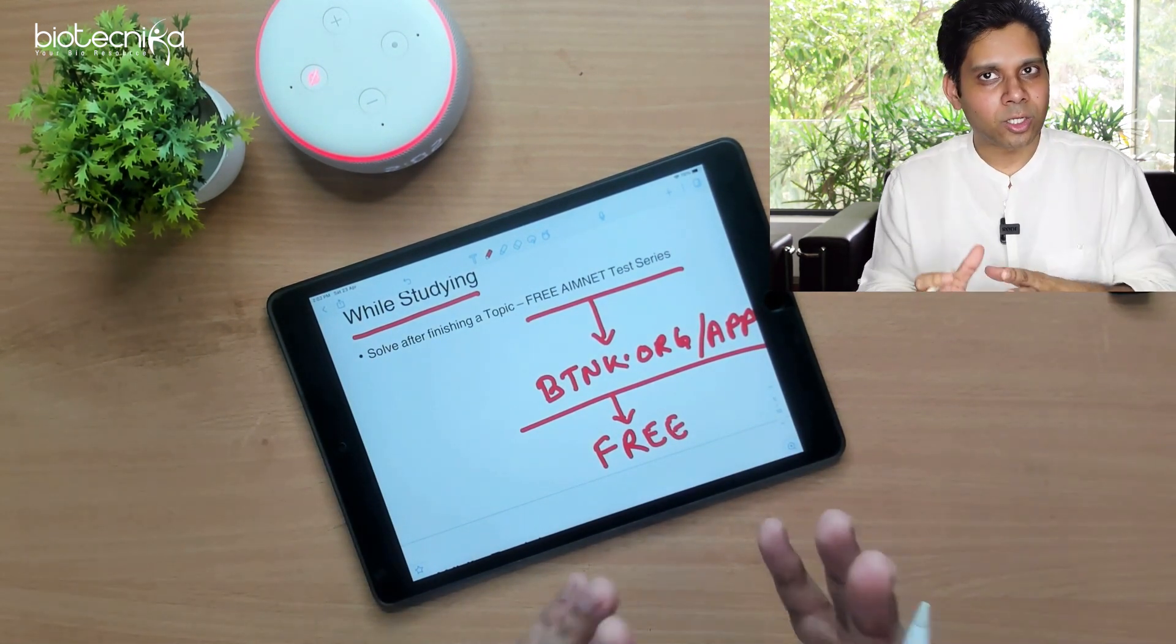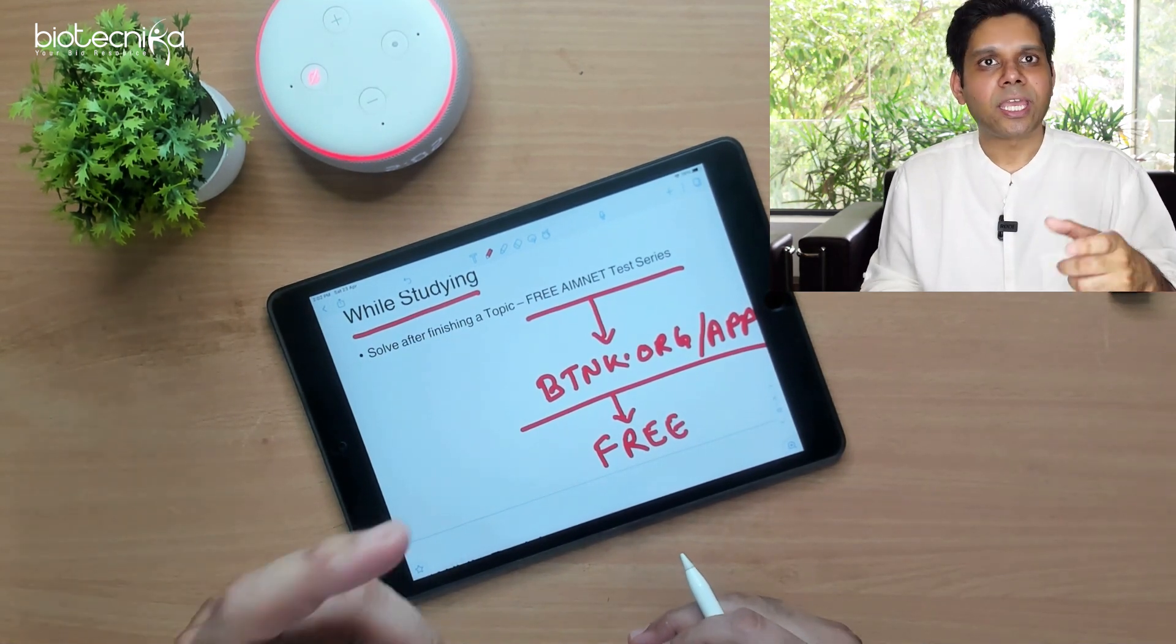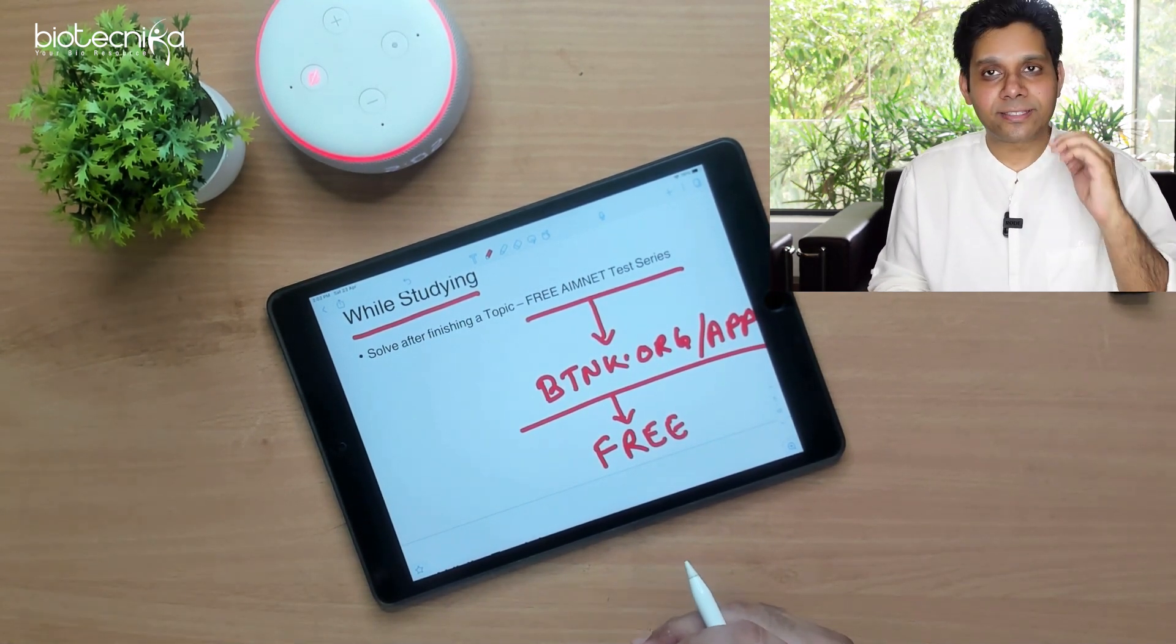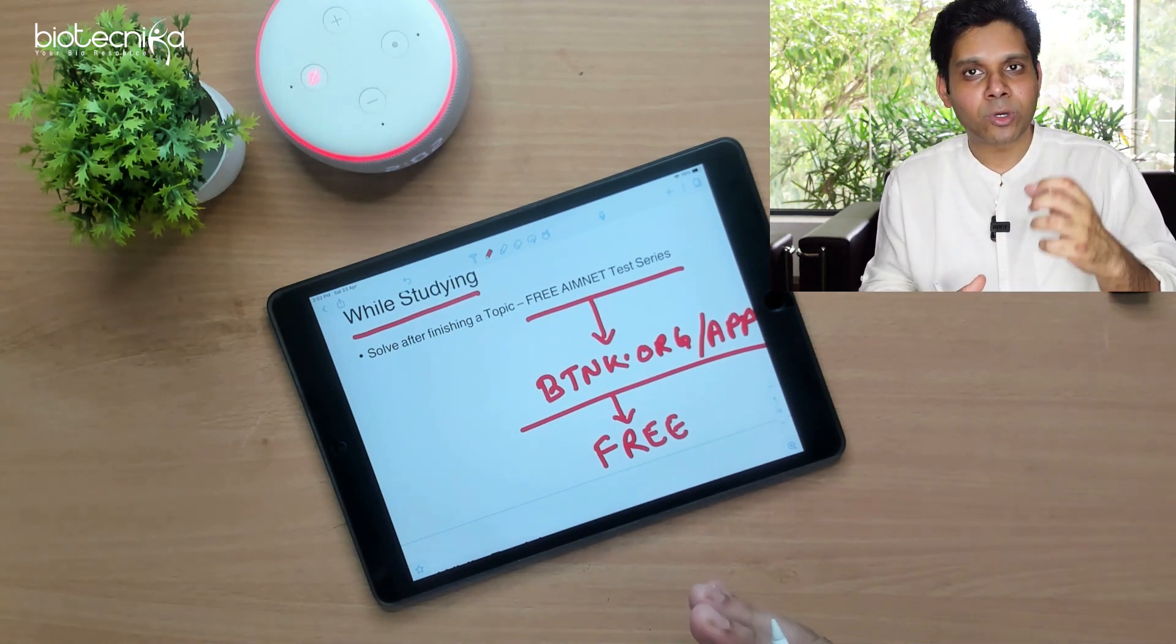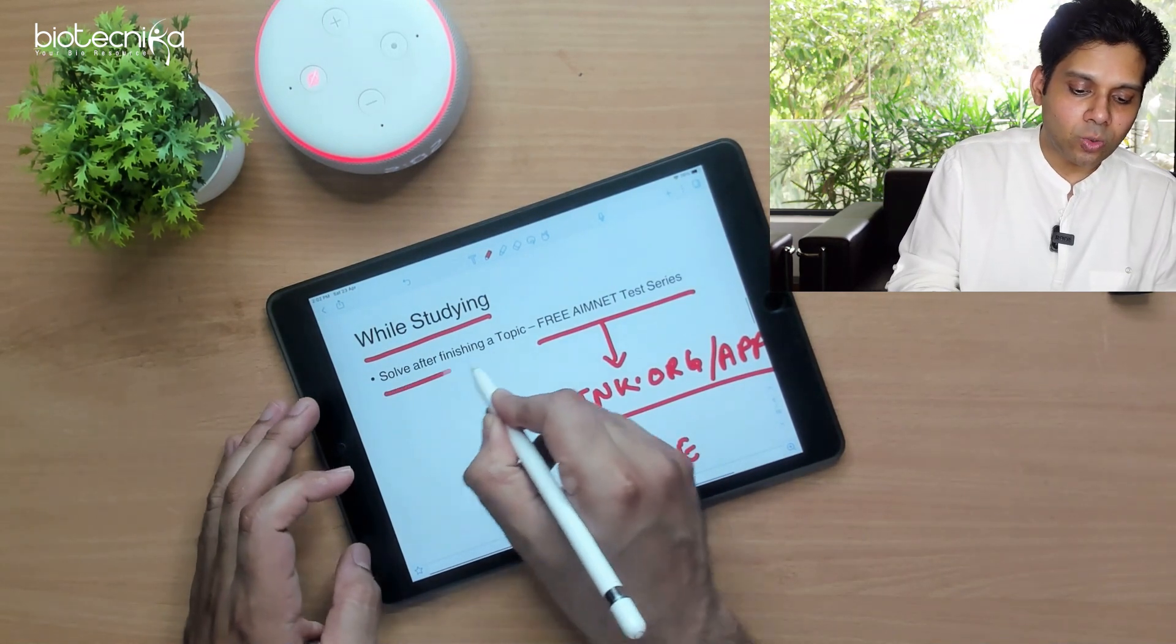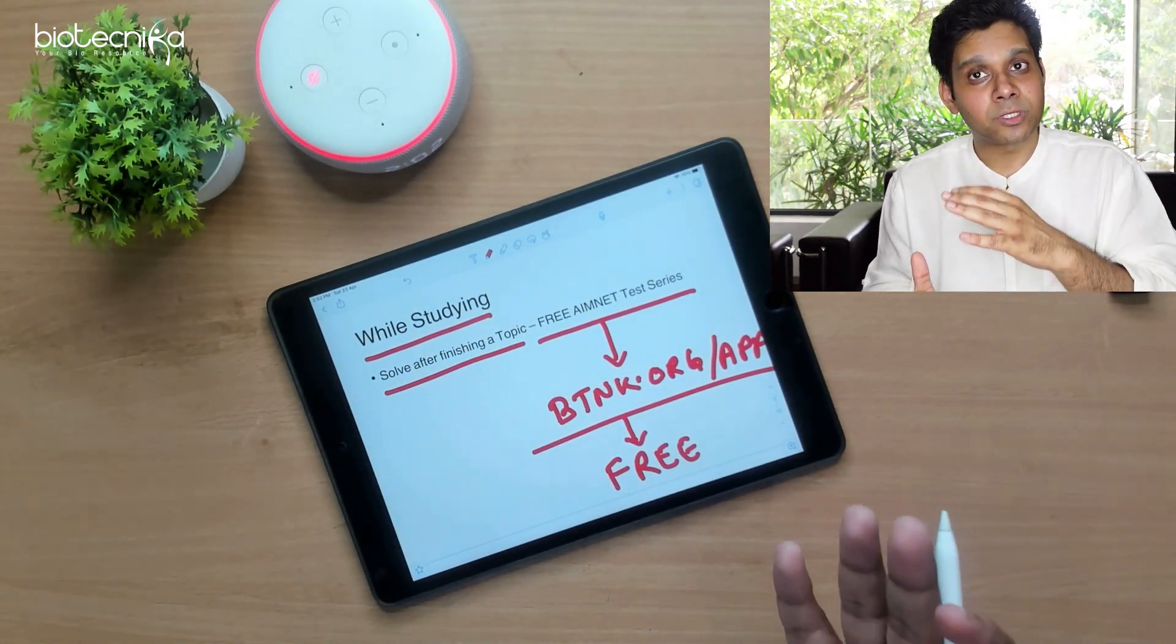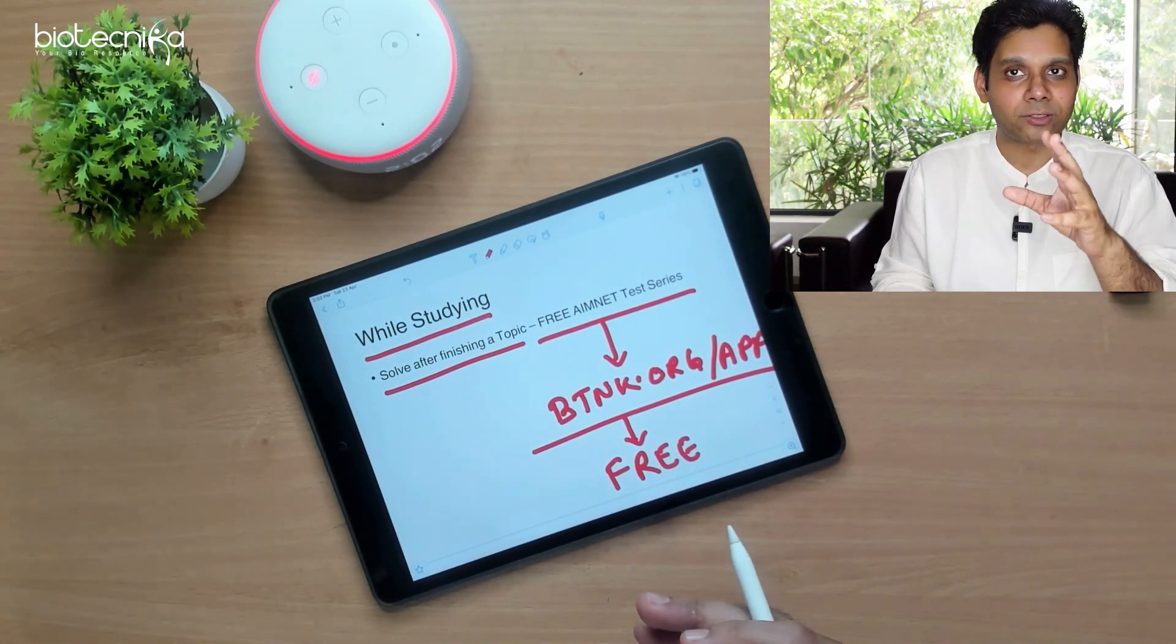When you are studying, suppose you studied Unit 1, you can go ahead and attempt Unit 1 test series called as MNET 1. You have attempted MNET 1, you will be thorough with that. So while studying, you can solve mock test papers based on previous year question paper.